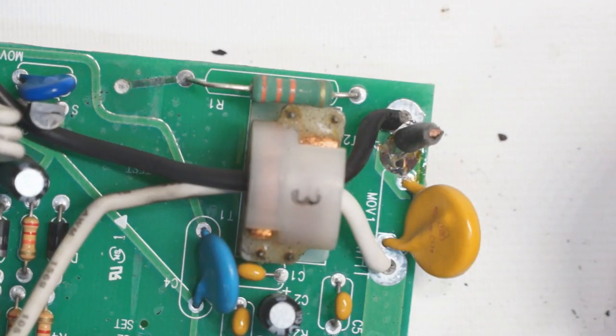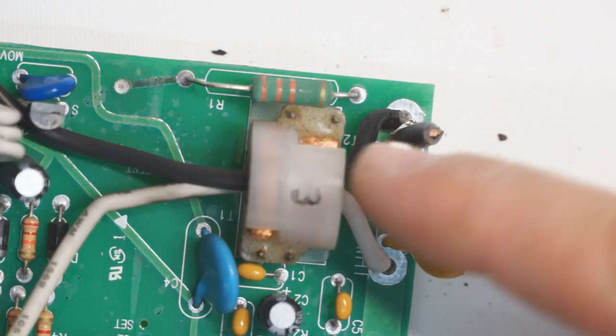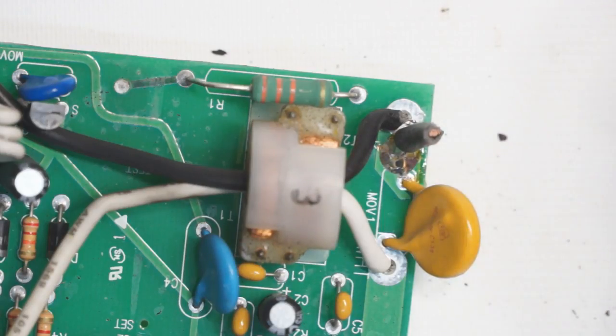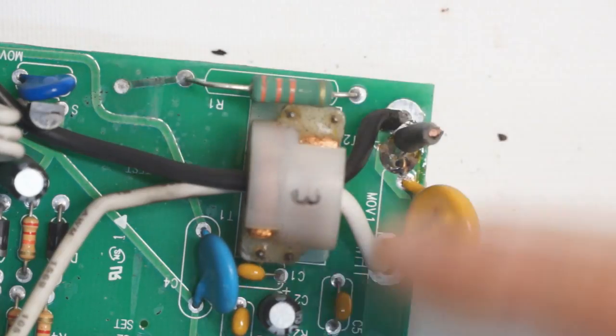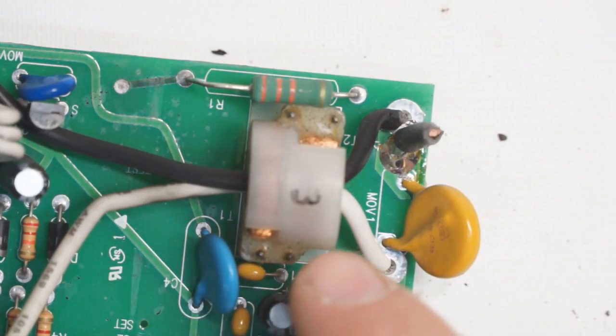But if you have a fault somewhere, like you have a leakage to ground through a tool or through the guy who is holding the tool, then this current transformer will read that you have current coming in through one line and less current coming back through the other line.